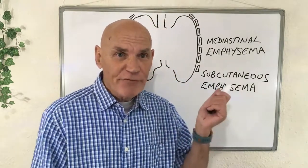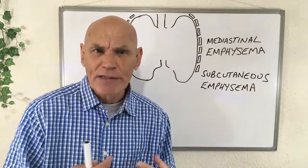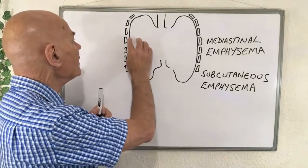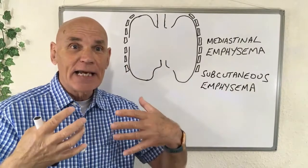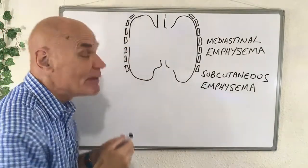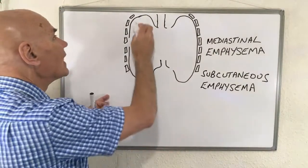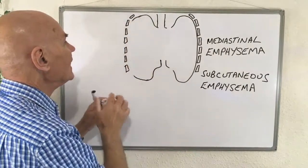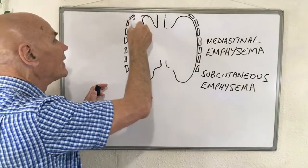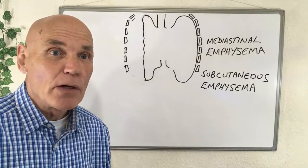These parts in my drawing represent the rib cage, because the lungs are inside the rib cage. If the lung burst here on the side, air gets trapped in the cavity between the lung and the rib cage. As I continue to surface, that air expands and causes the lung to collapse. This is called a pneumothorax.